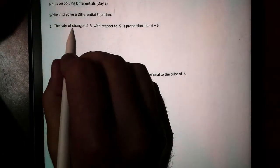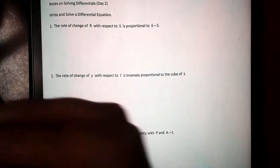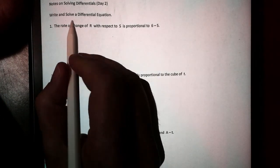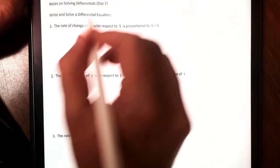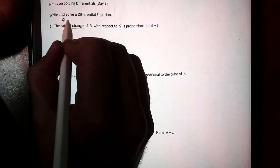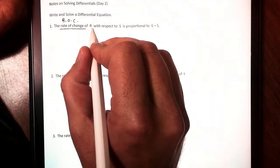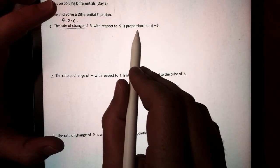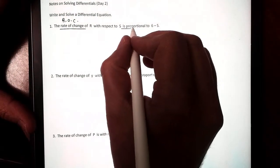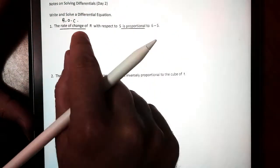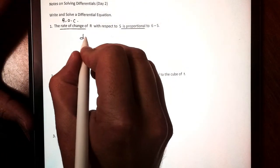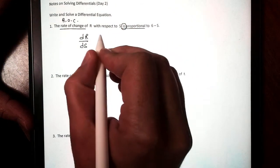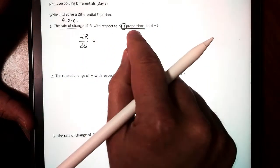So we want to write and solve a differential equation. Now, the first one says the rate of change of R with respect to S is. This is just like what you did in Algebra 1. You're going to write an equation, and they're saying the rate of change. Well, any time they say the phrase rate of change, they're talking about a derivative, R-O-C. And they're saying the derivative of the function R, we're taking the derivative with respect to S.